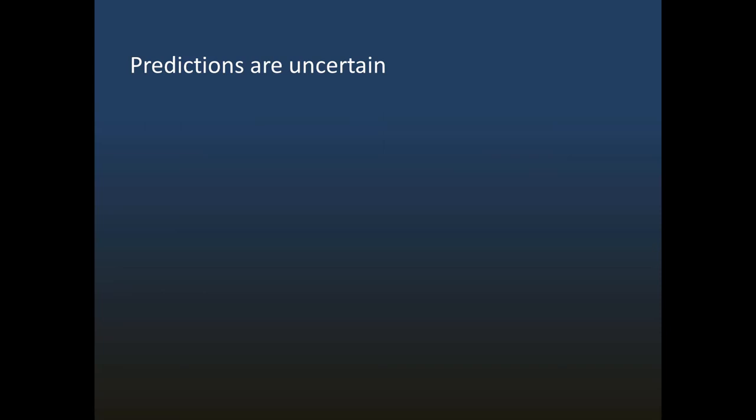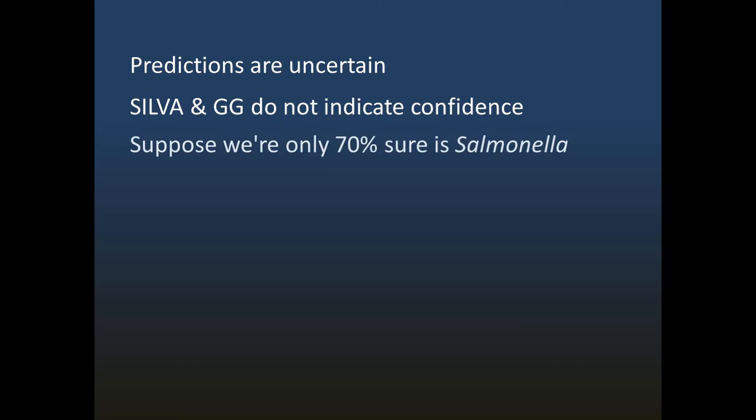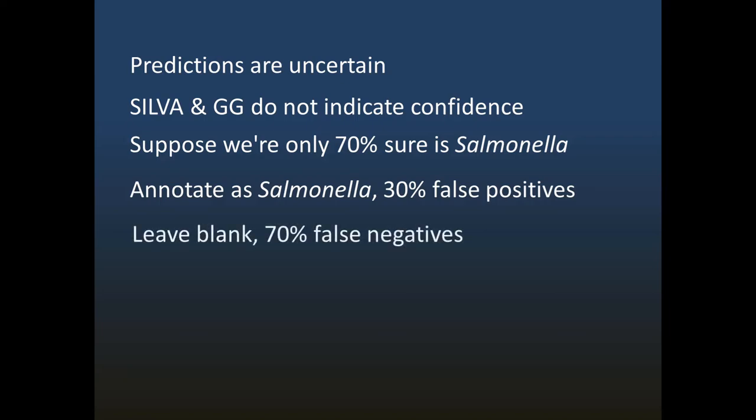Taxonomy predictions are uncertain, but SILVA and Greengenes do not give any indication of confidence. This causes a new problem. Suppose the curators of SILVA have a sequence they think is probably Salmonella, but they're only 70% sure. What should they do? If they annotate the sequence as Salmonella, then applying this strategy to all annotations could lead to 30% false positives. On the other hand, if they leave the genus blank, then they could have 70% false negatives. Keep in mind that a blank name can indicate a novel group or a named group where the confidence is too low to report.